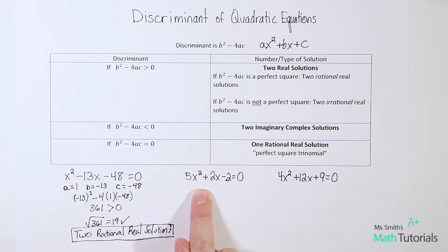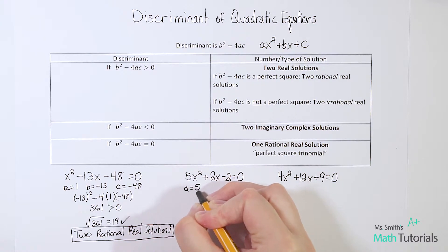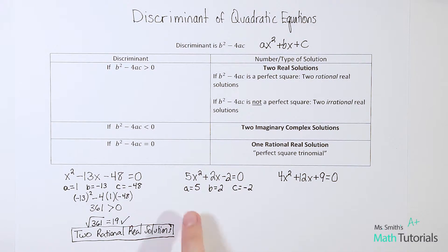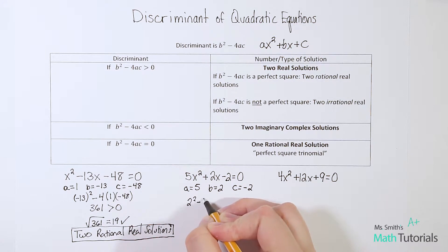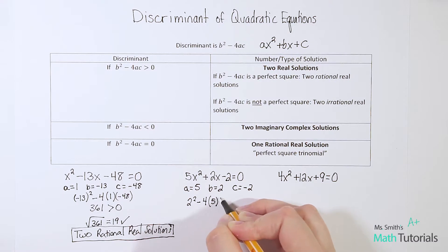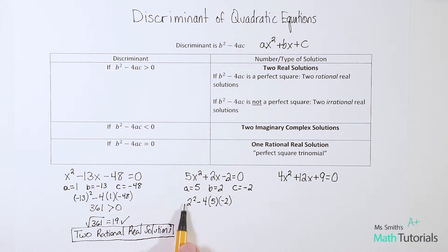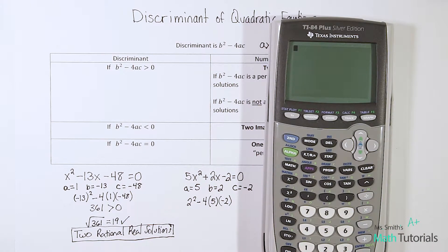Let's try another one. For this equation, a equals five, b equals two, and c equals negative two. Let's plug these into the discriminant: b squared minus four times a times c, so two squared minus four times five times negative two. Note that two is not negative, so parentheses aren't strictly required here, unlike when b was negative 13. Using the calculator: two squared minus four times five times negative two gives us 44.